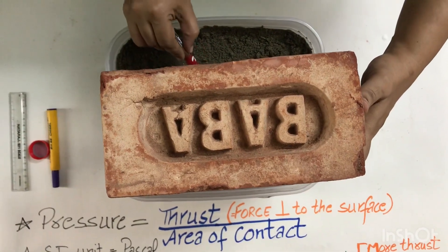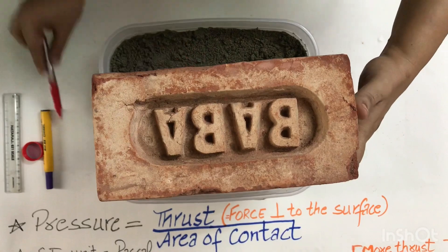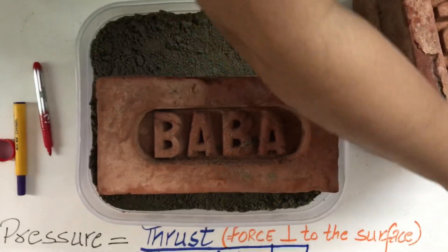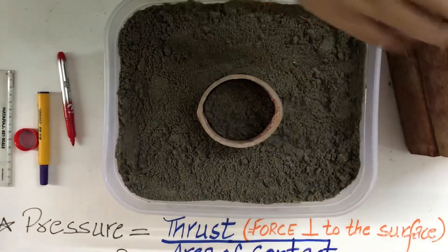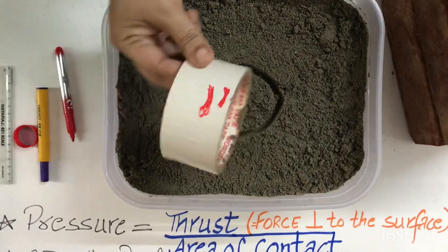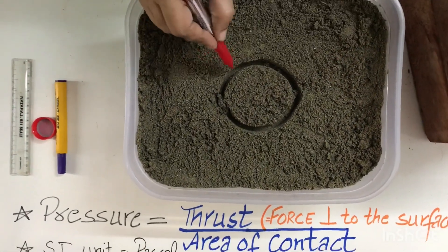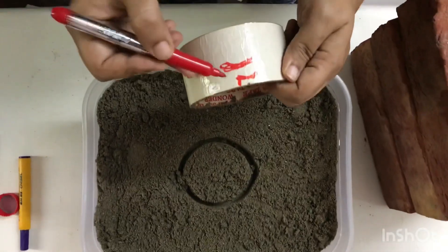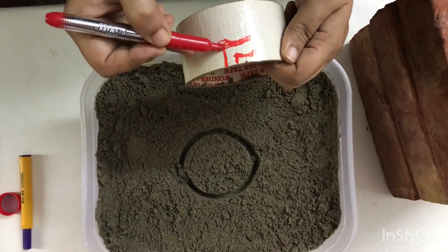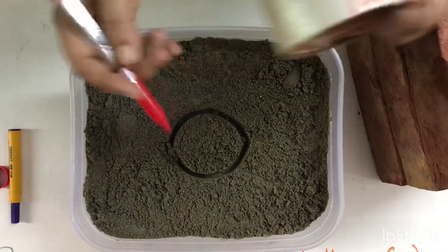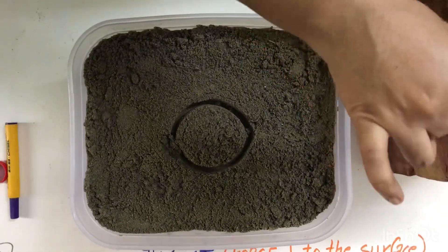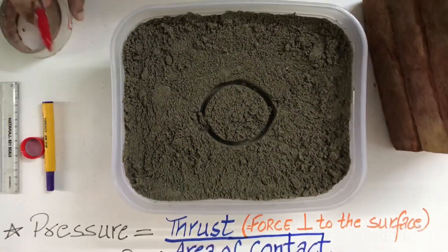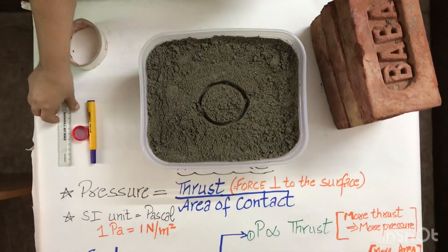Now I will mark the level here on the tape. Removing it — you can see the impression has gone deeper. Initially the impression was over here; now it has gone this much deeper. It has nearly increased three times as we increased the thrust or force applied by three times. So as thrust increases, pressure increases — more thrust, more pressure.